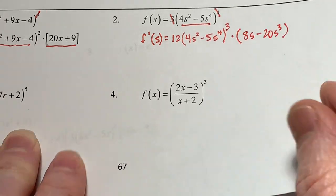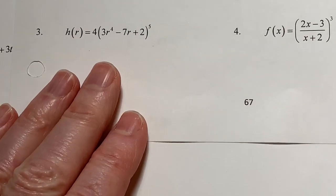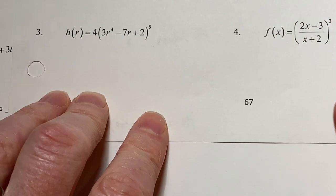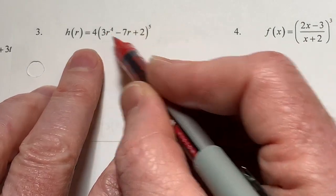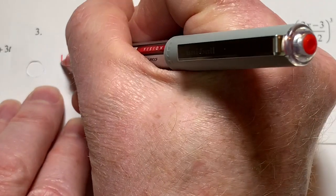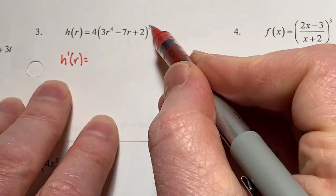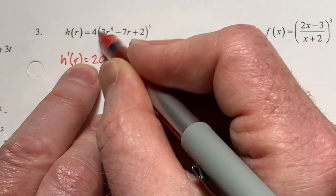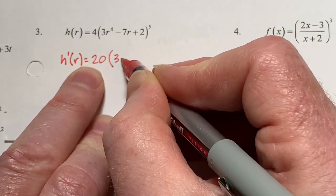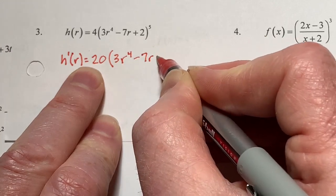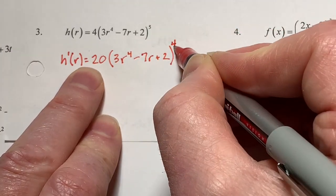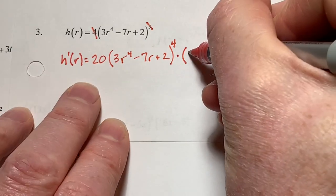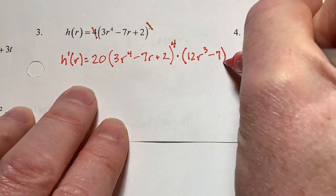Jumping down to number 3: 5 times 4 is 20, copy down the u part, decrease the exponent by 1. That takes care of the outside function. Now go to the inside part and link it — chain rule — and you get 12r cubed minus 7. There are lots of ways to see the chain rule; it's not always with the power. We just don't know a lot of rules yet, so it currently looks like this power rule thing. It has way more applications which we'll get to shortly.